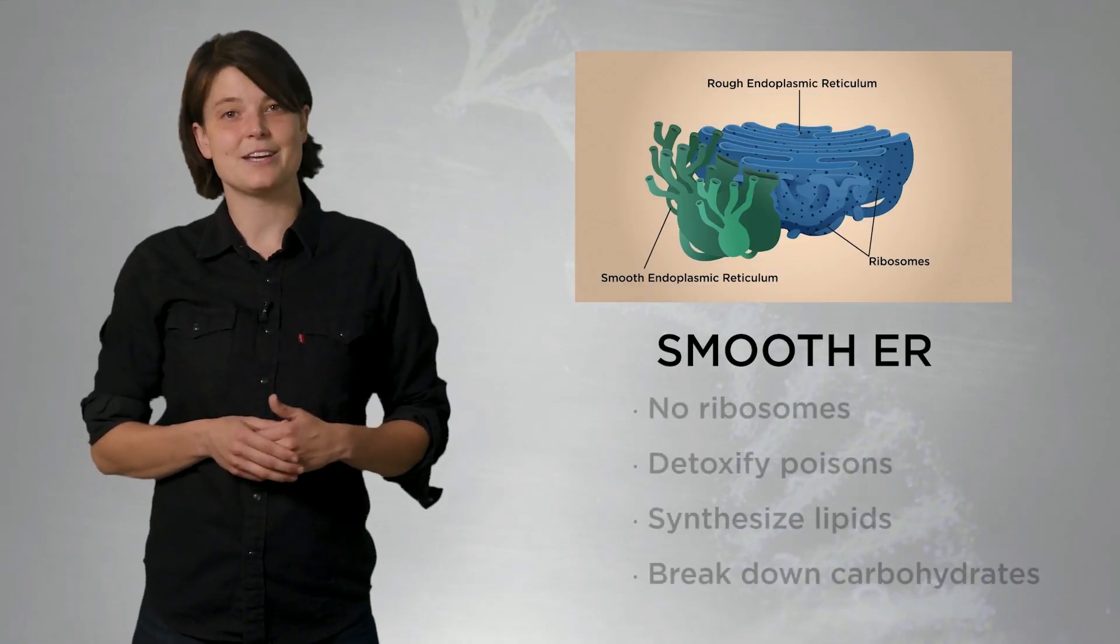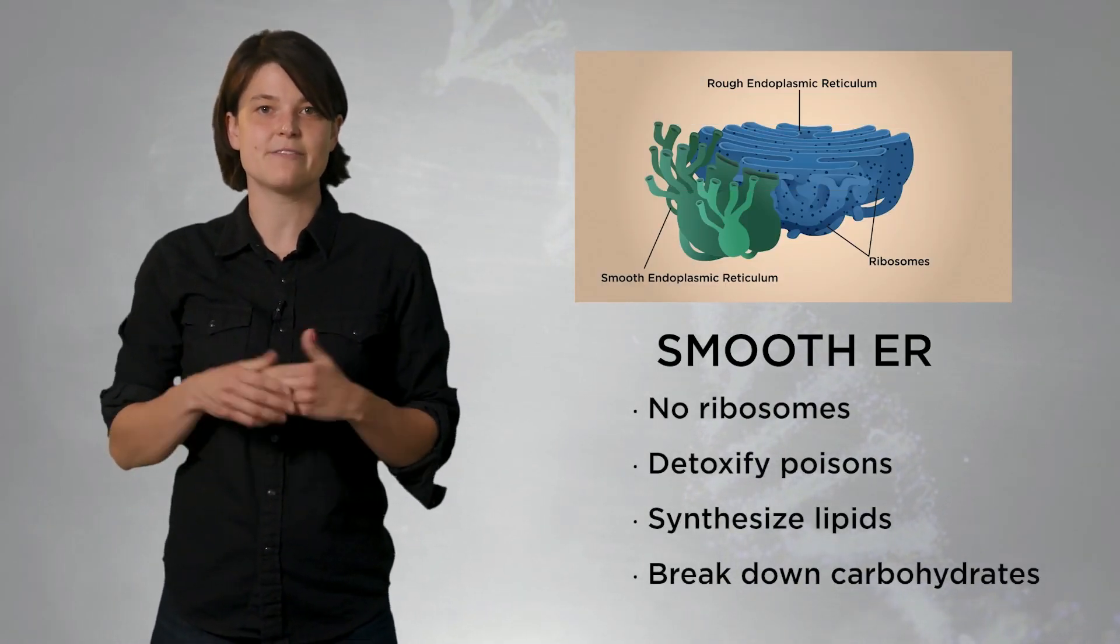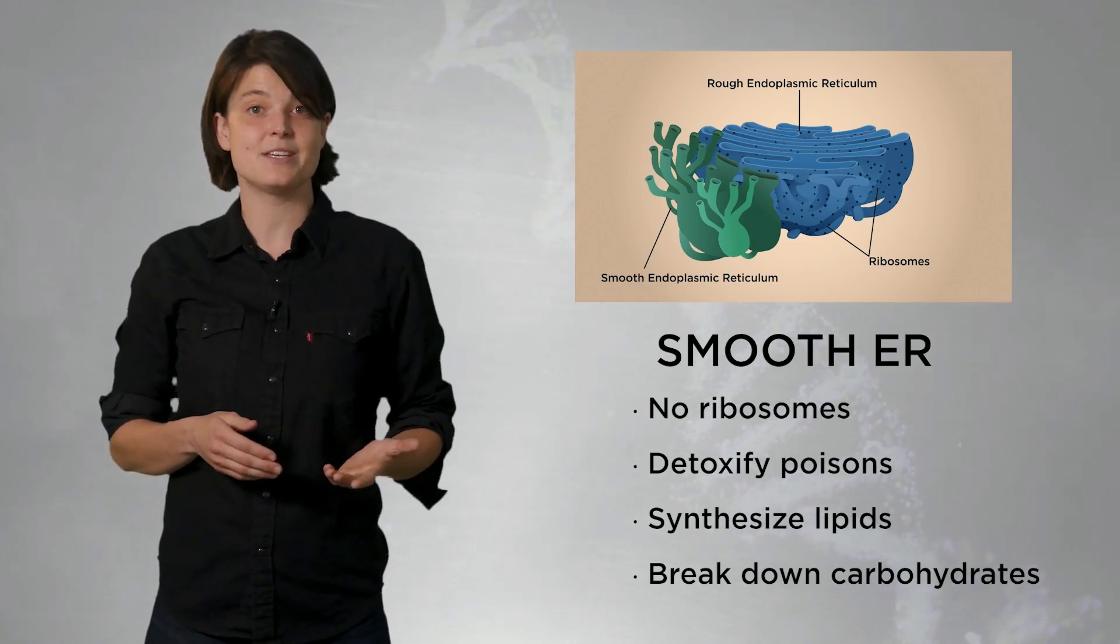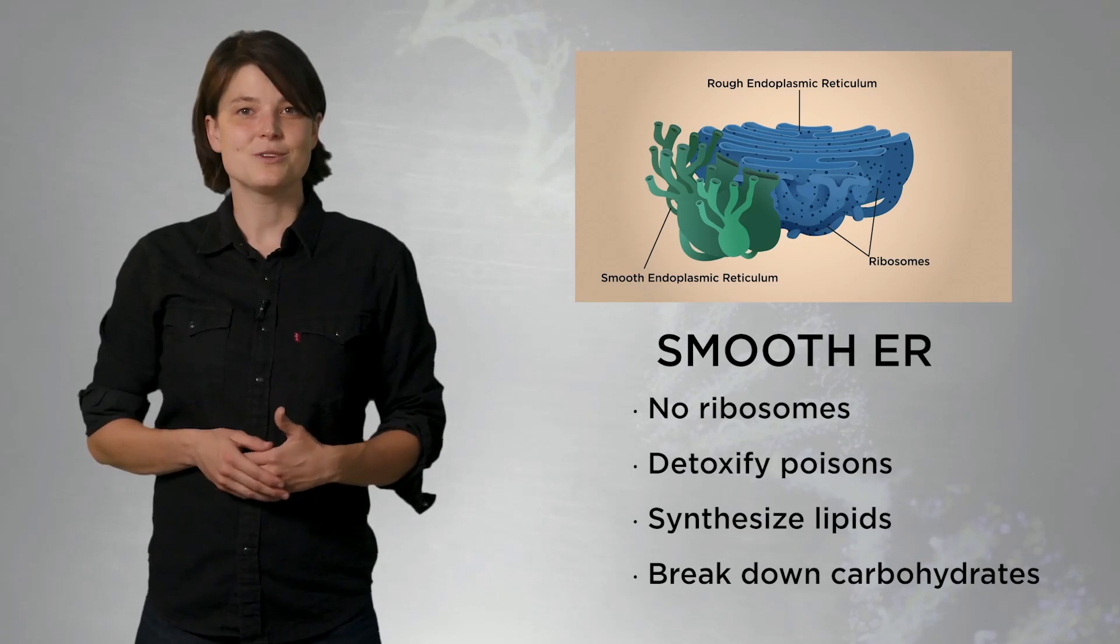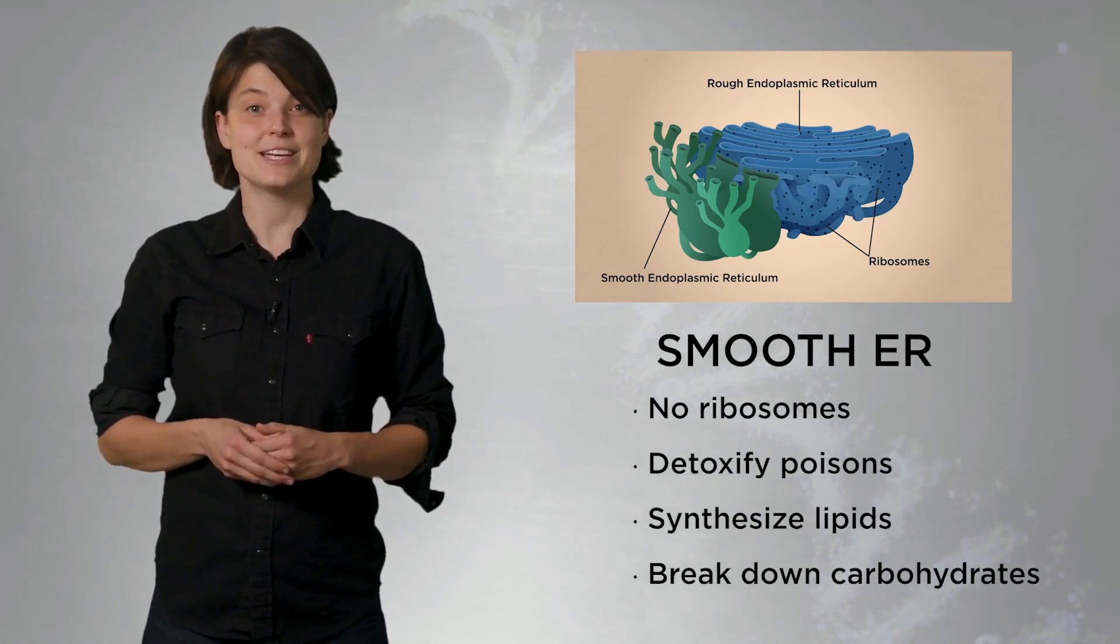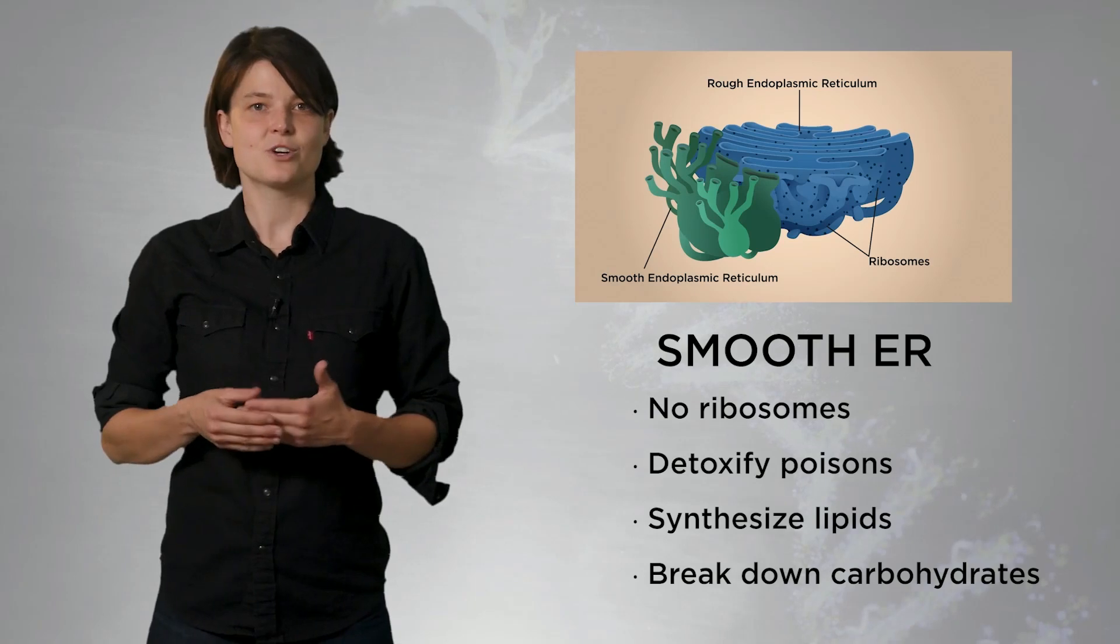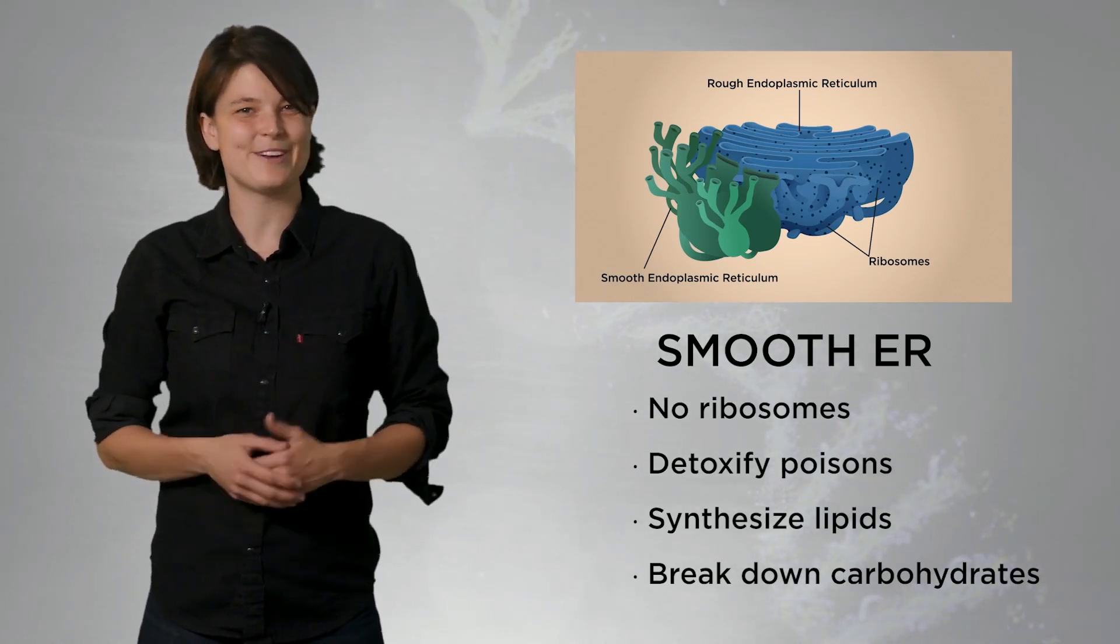The smooth ER does not contain ribosomes. The smooth ER contains enzymes that help to detoxify poisons, synthesize lipids, and break down carbohydrates. The smooth ER also stores calcium ions, which are essential for protein secretion, and maintaining concentration gradients, which are also vital for functions of specialized cells like muscle cells and neurons.